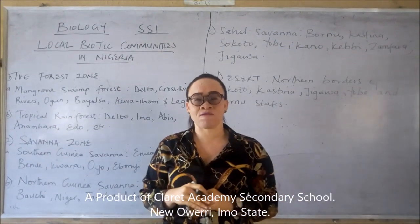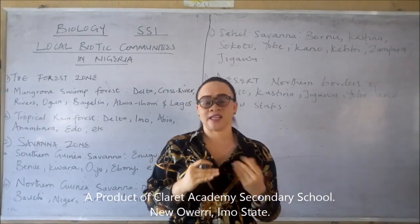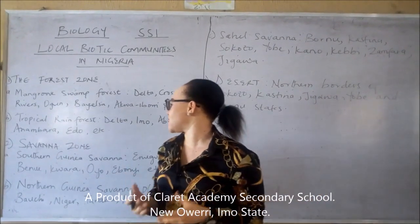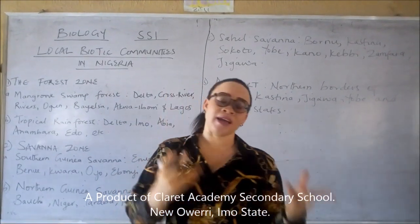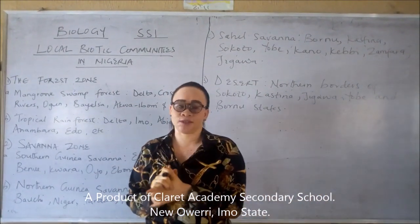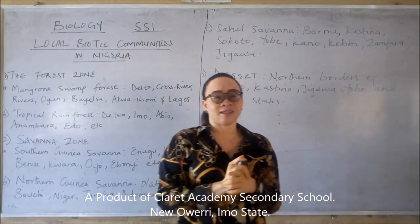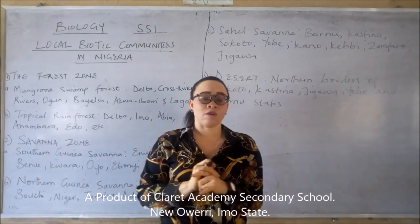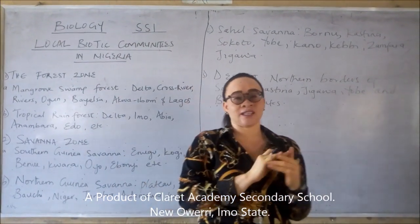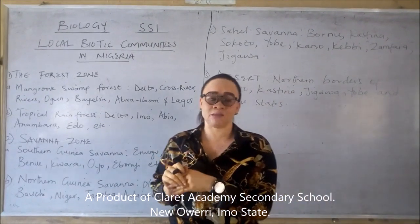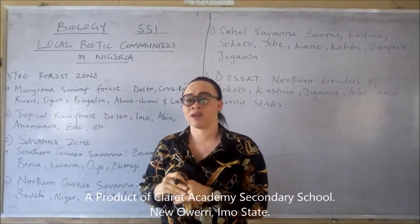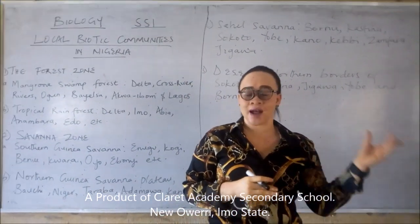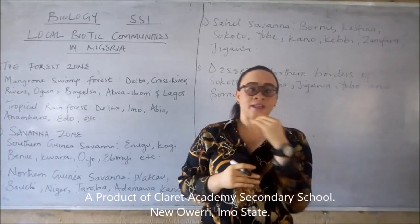Now the tropical rainforest is found in states like Odia, Imo, Delta, Kaduna, Edo, Anambra, etc. In this region, you have a high rainfall of about 200 cm per annum, and it is also characterized by high temperature.